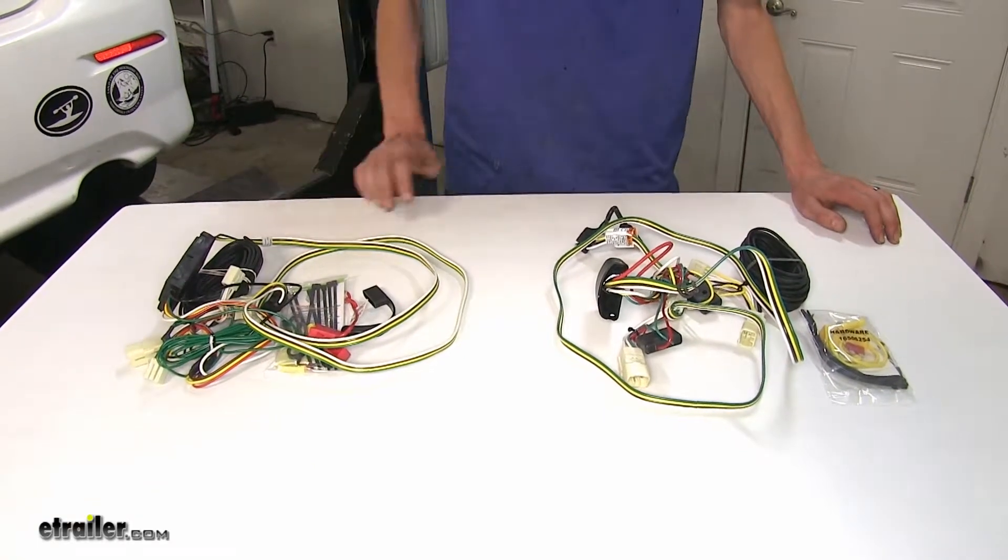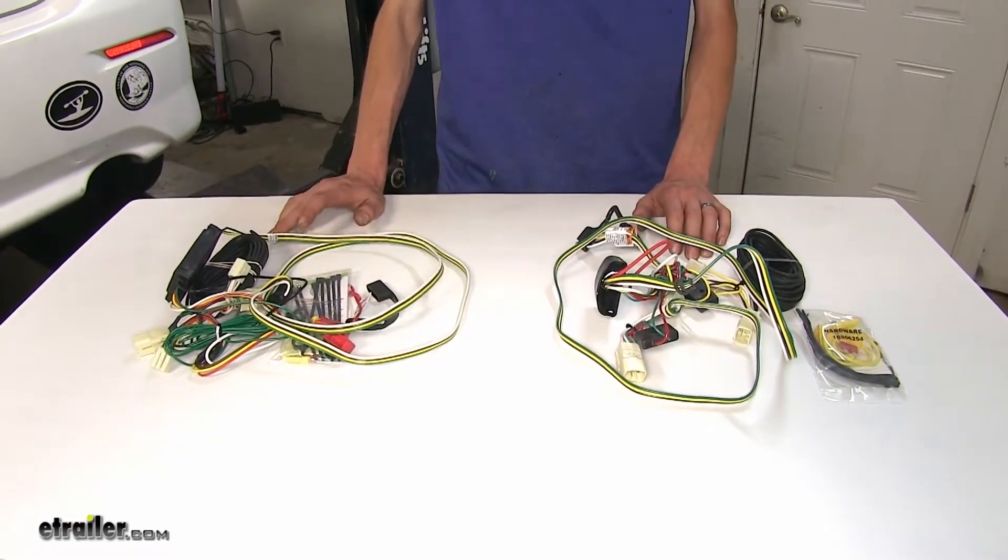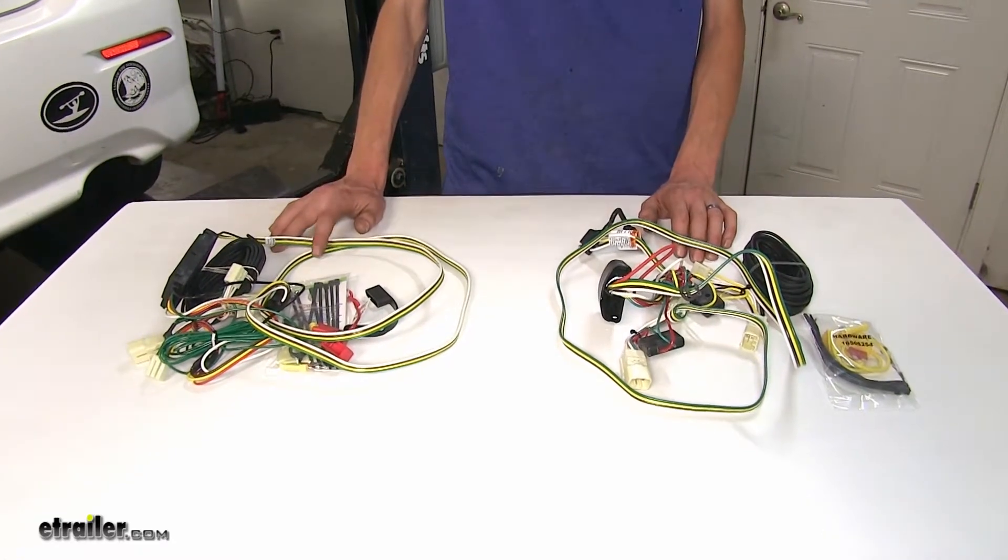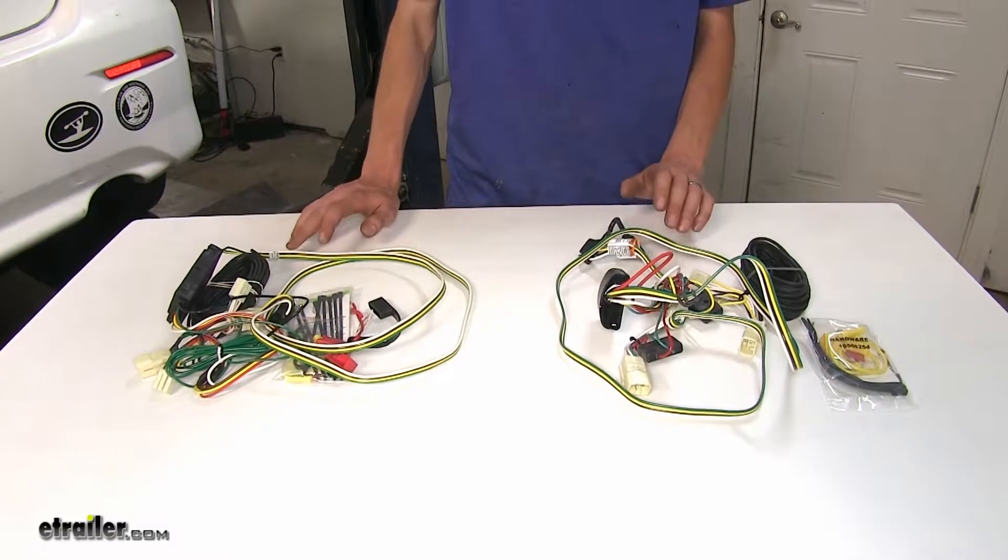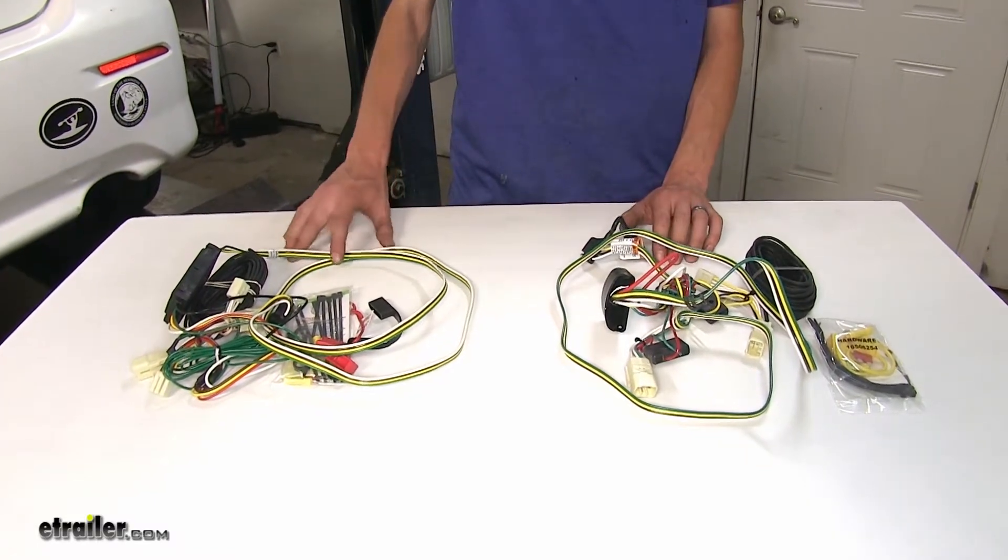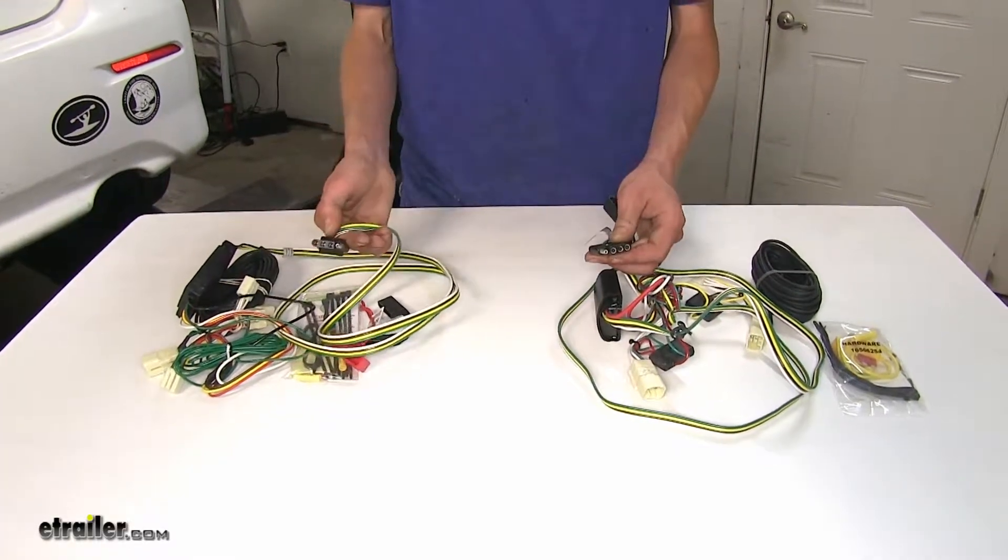Now both of our wiring harnesses are going to accomplish the same end goal for us. They will give us the bare minimum lighting functions as required by law in order to tow a trailer. We're going to get our tail lights, our turn signals, our brake lights, and our running lights off our four pole flat connector for both of these.